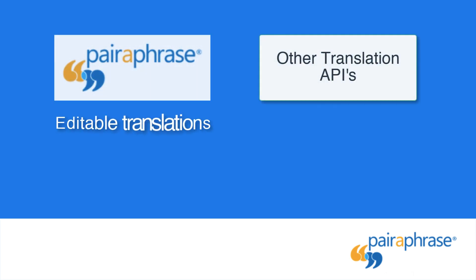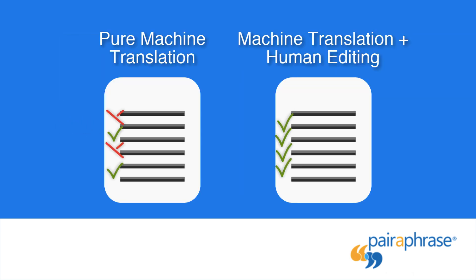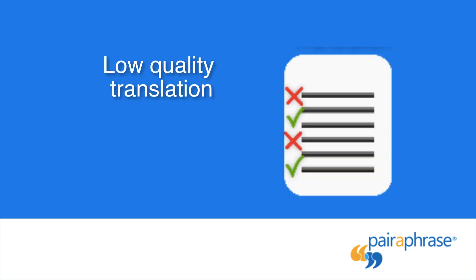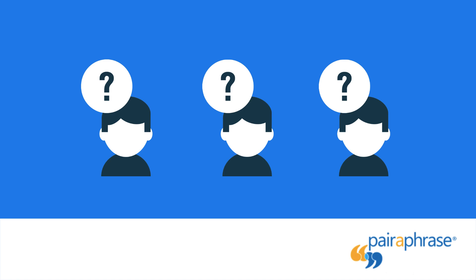The first is editable translations. With most translation APIs, you receive just raw translations from pure machine translation. The quality of pure machine translation is nowhere near as good as the quality from machine translation that has been edited and improved by a human translator. Essentially, you receive a first draft without any way to improve the quality of the translation. The consequence is that your message can get lost in translation or look less than professional.